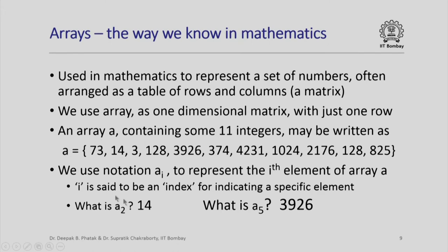We often use the notation A subscript i to represent the ith element of array A. Here i is said to be an index because it indicates a specific element of the array A. So for example, A2 represents the second element which is 14, A5 represents the fifth element, which is 3926, and this is how we can refer to individual elements.